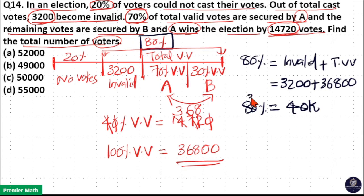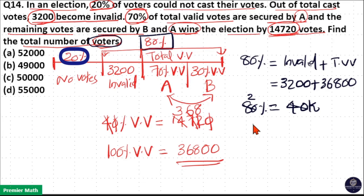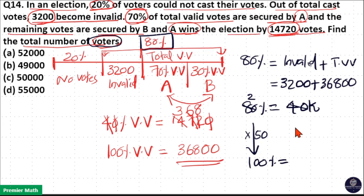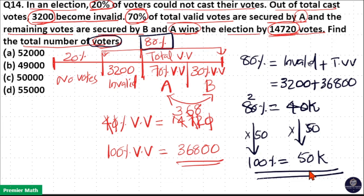40,000 divided by 80 gives 2% equals 1000. Total number of voters is 100%, which is 80% plus 20%. So 2% × 50 equals 100%, which equals 1000 × 50 equals 50,000. So 100% means the total number of voters is 50,000. Option C is the answer.